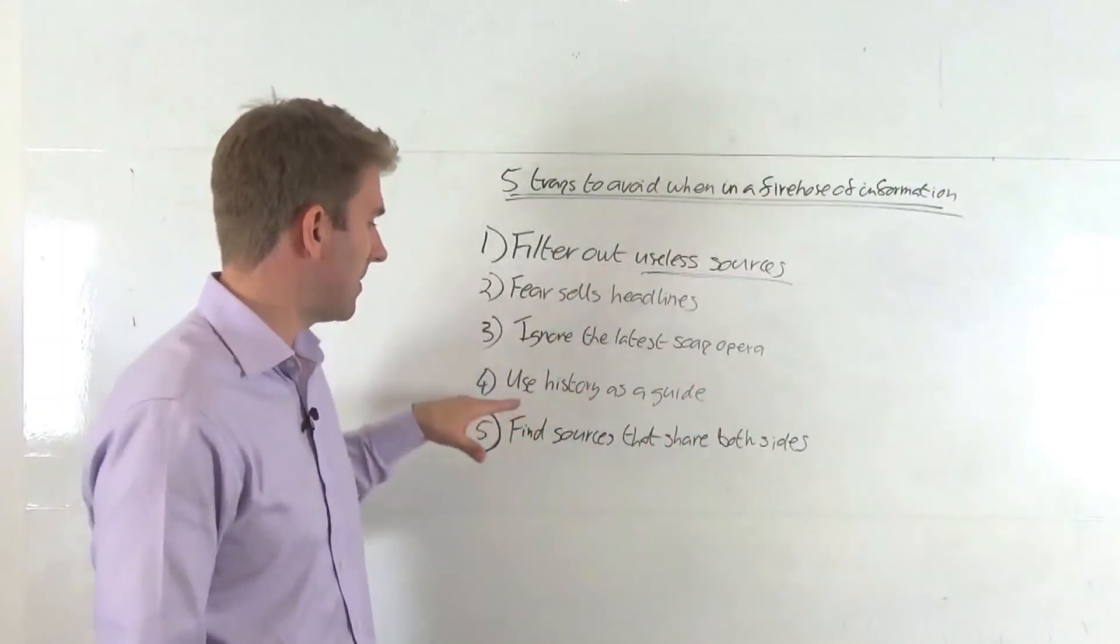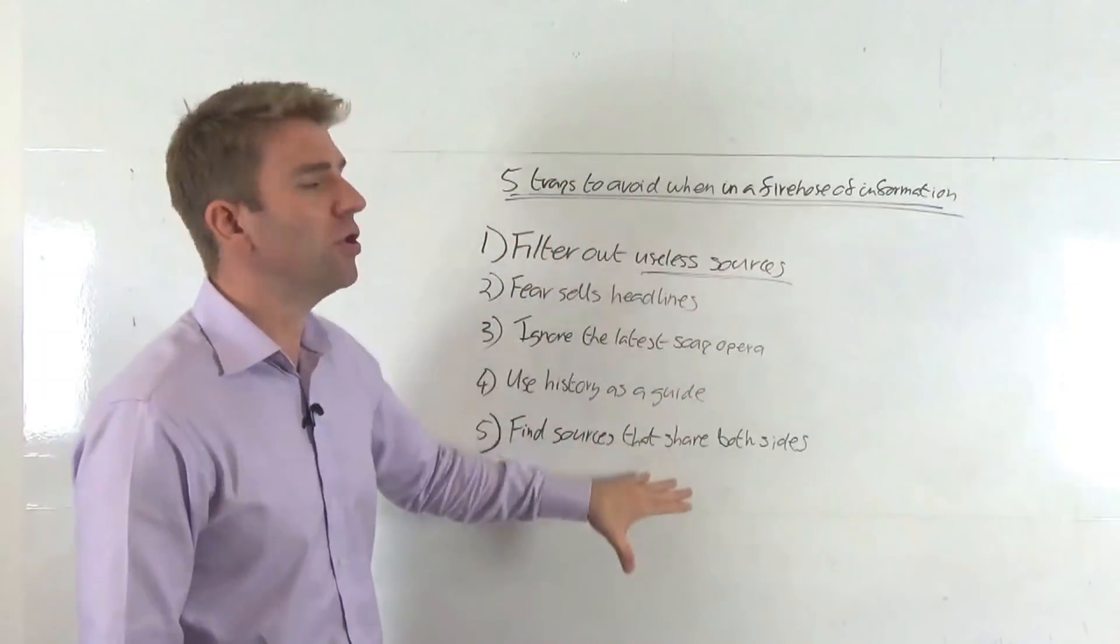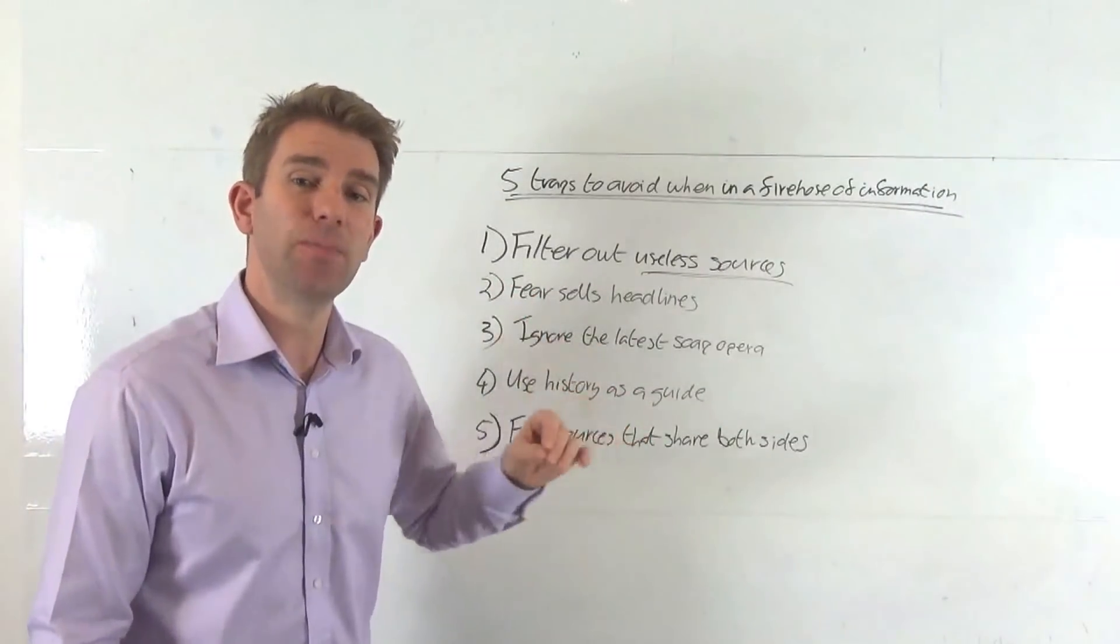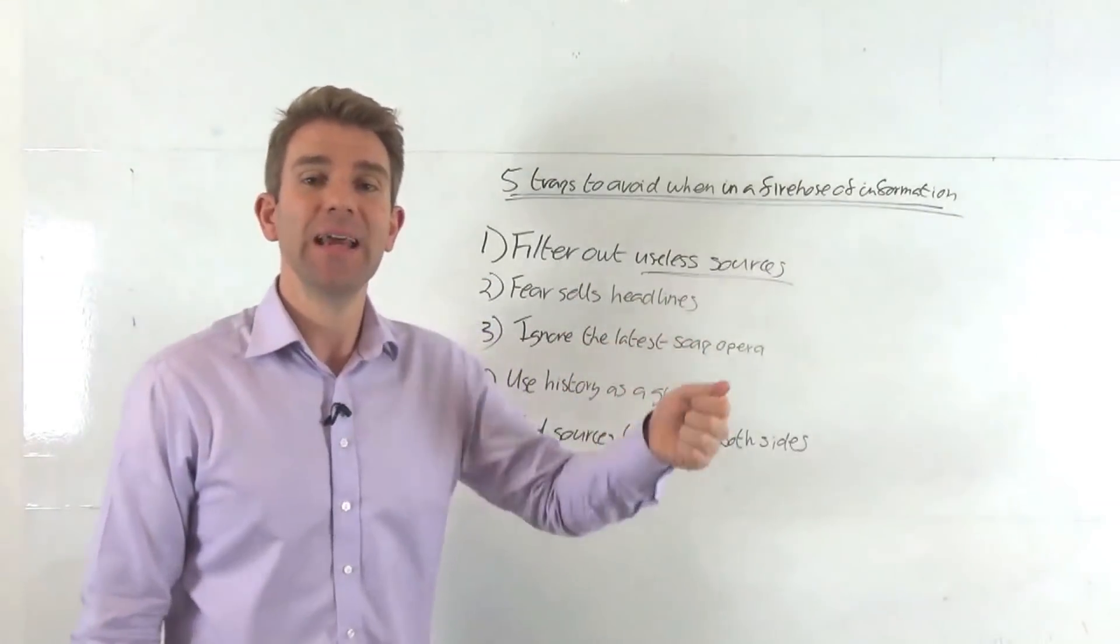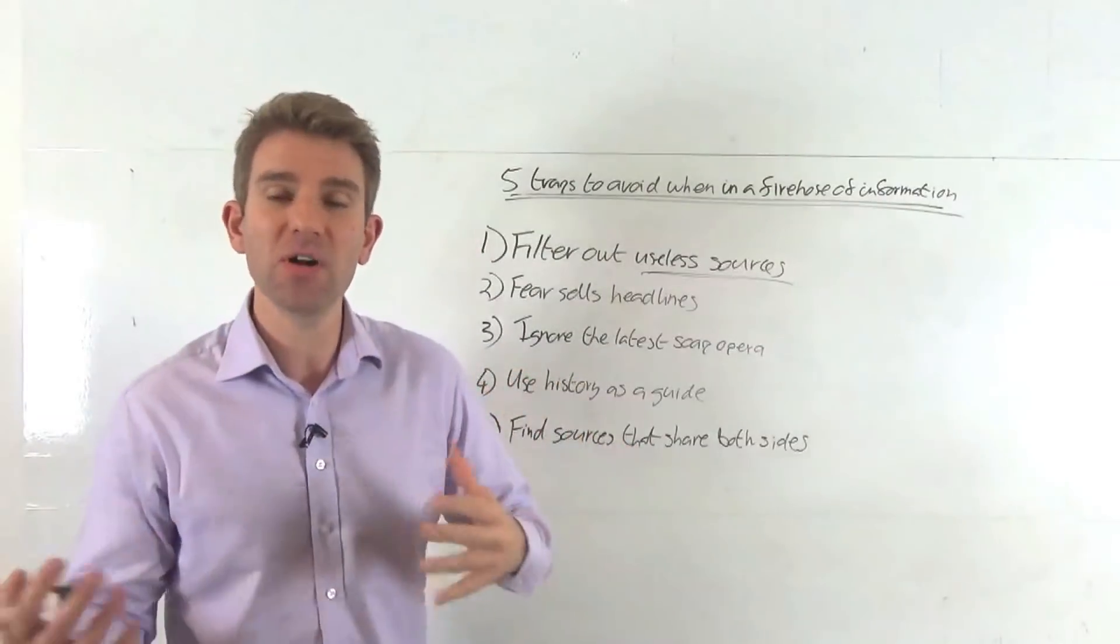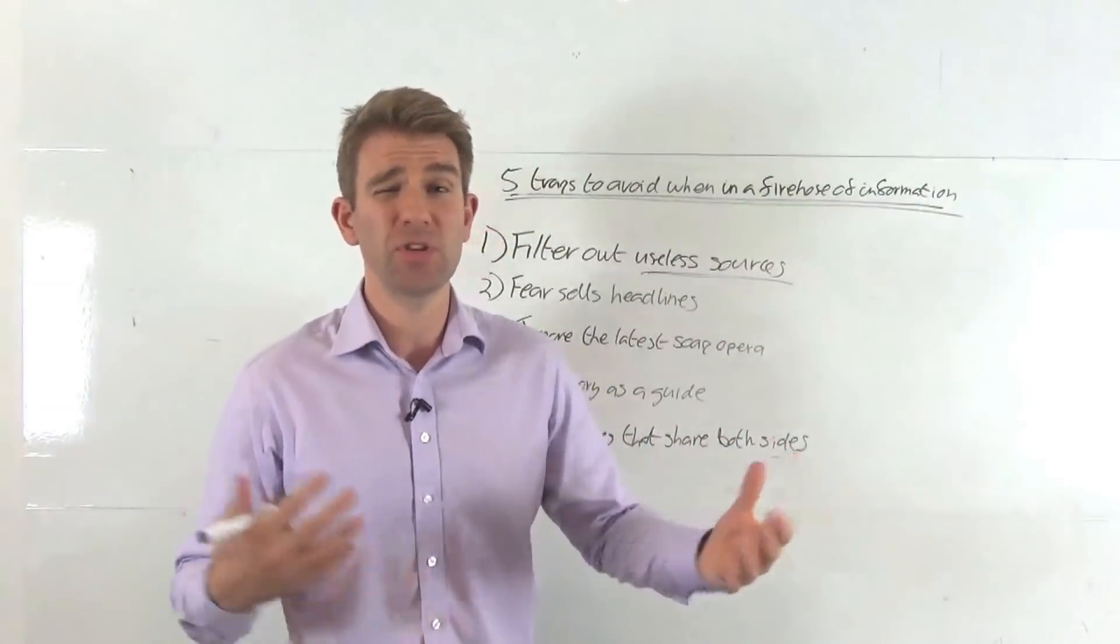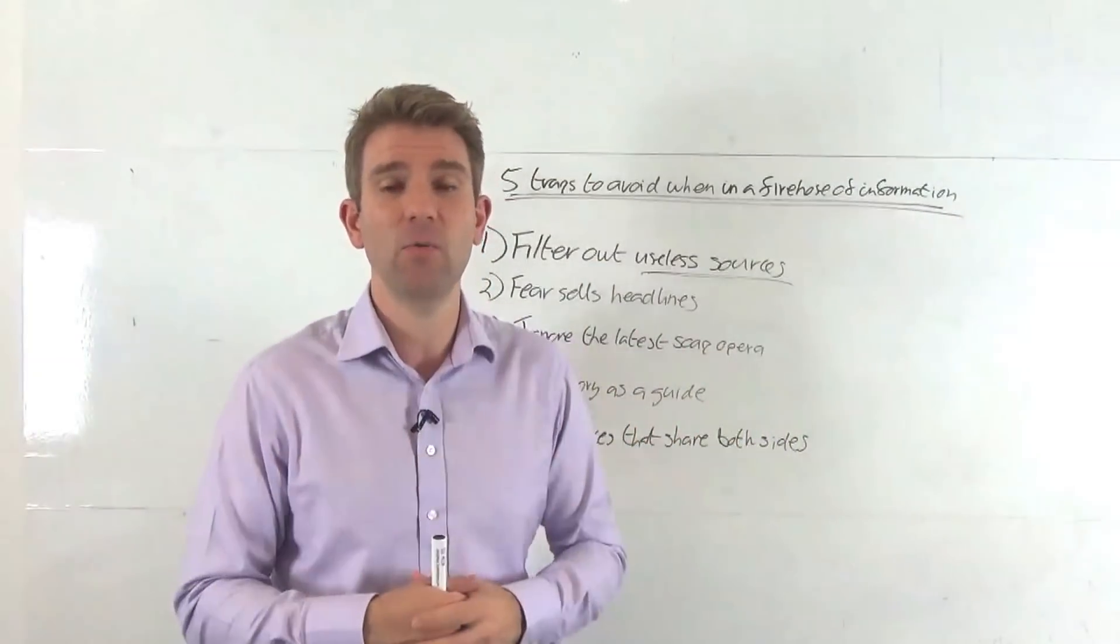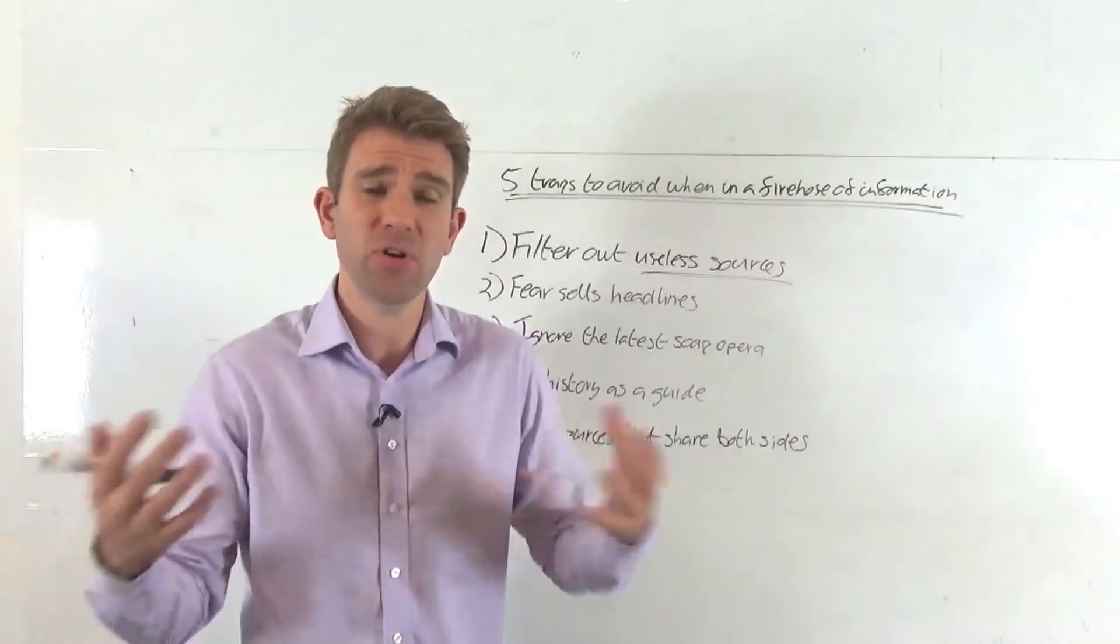So watching out for hysteria is the trap. Using history as a guide is recommended. Okay, number five. The trap for number five is not looking at independent sources that look at both sides. It's looking at one-sided information. There are good news sites out there that share both sides of the argument. They are there to present the argument to you. And often these are ones that are subscription-based, because that's how they make their money. They're not making their money specifically by everyone watching them out of fear or whatever.